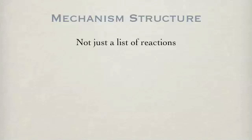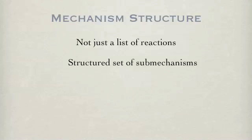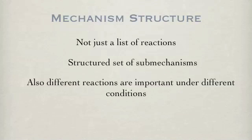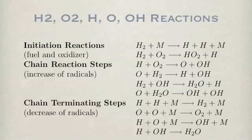The hydrogen mechanism is not just a list of reactions. It is in fact a structured set of sub-mechanisms and regimes that are significant under different conditions. Viewed as a chain-branching process, we can see the different types of reactions based on the number of radicals created and destroyed between the reactants and products.